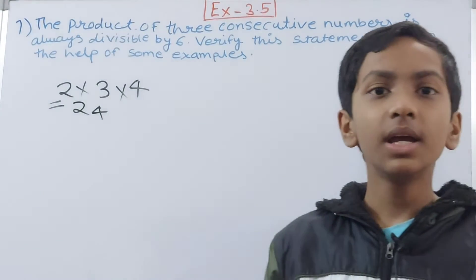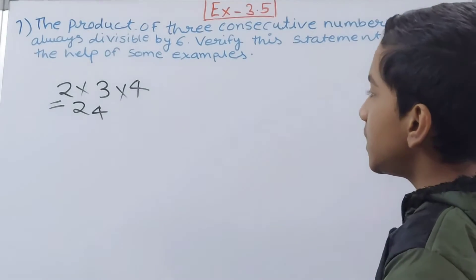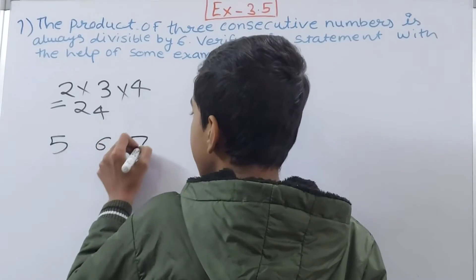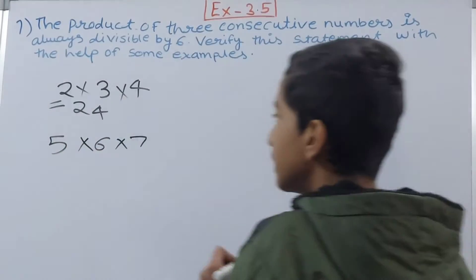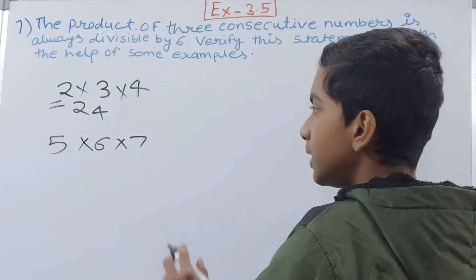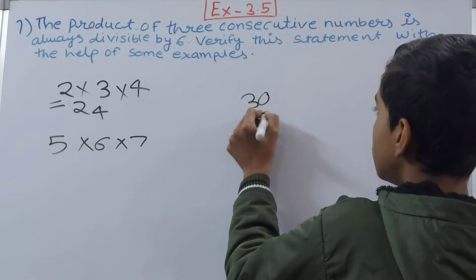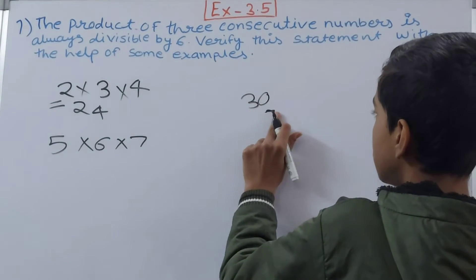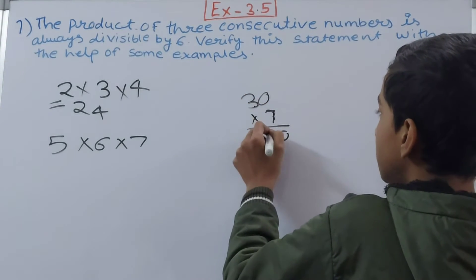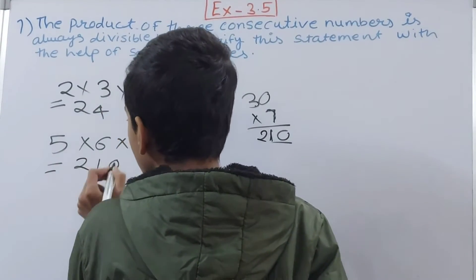Let us take another example. Let us take 5, 6, and 7, and multiply them. 5 into 6 is 30, and 30 into 7 is 210.